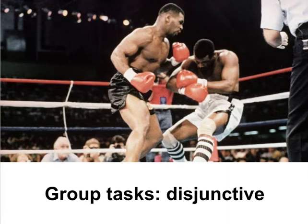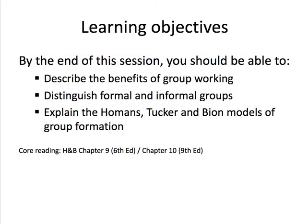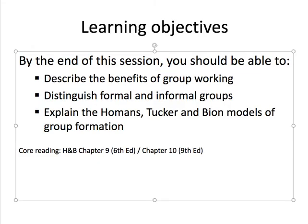So groups can have higher performance than individuals, but not necessarily. It depends on the nature of the group, the way the group is organised, but also the nature of the task. When we think about the benefits of group working, those economies of scale and scope depend on whether it's an additive task, a conjunctive task, or a disjunctive task. They also depend on the nature of the group.